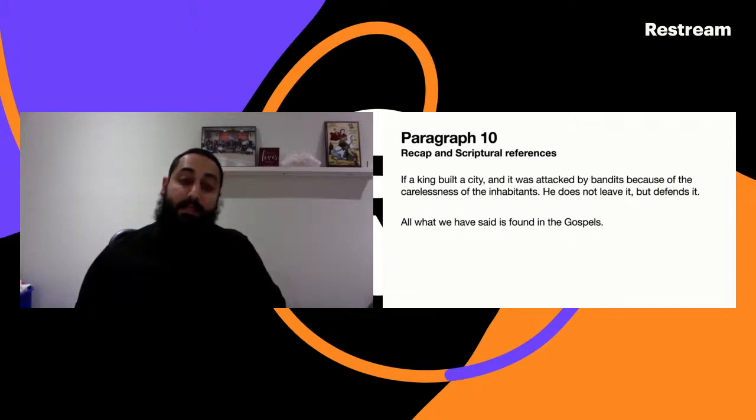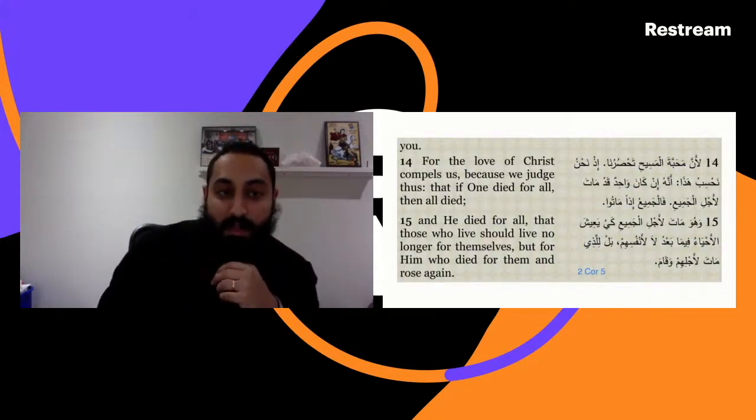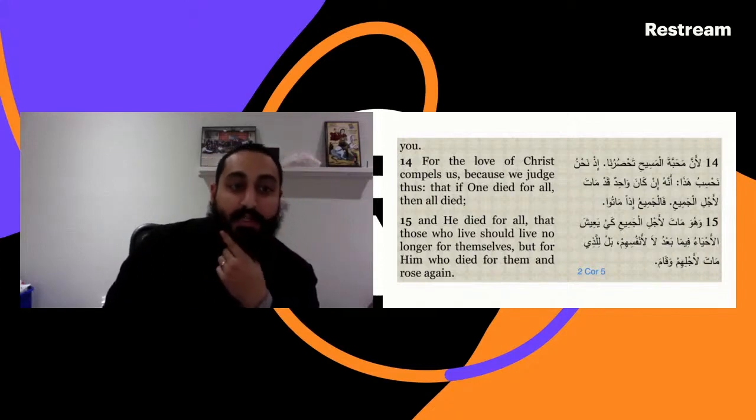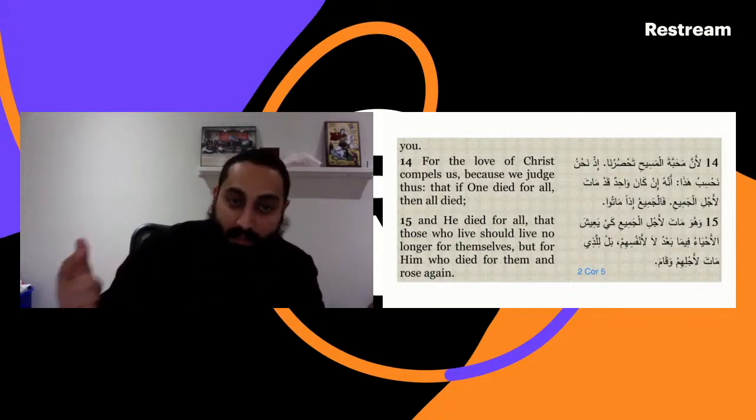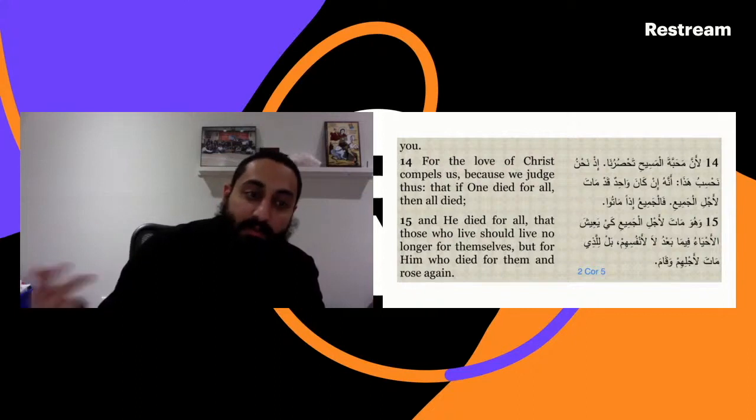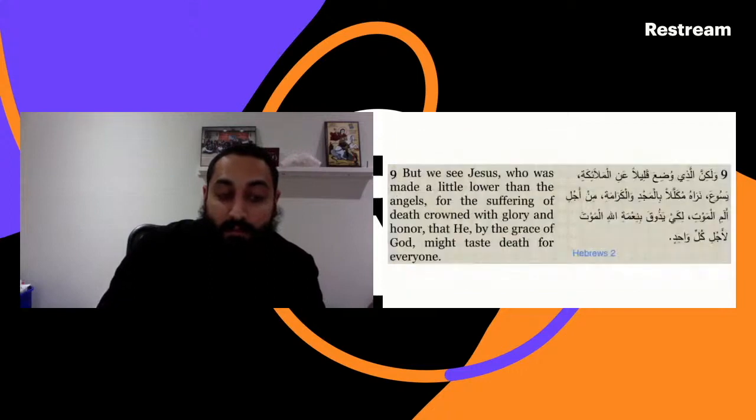In paragraph 10 we're going to have a recap, and he beautifully includes verses from the Bible that speak to the same things that he is speaking to. He moves on with this analogy of the king and he says if a king built a city and it was attacked by bandits because of the carelessness of the inhabitants, he does not leave it but he defends it. All what we have said is found in the gospel. All St. Athanasius has said is found in the gospels. Beginning from 2 Corinthians chapter 5, he says: For the love of Christ compels us because we judge thus, that if one died for all then all died. So Christ died for all of us, and through Him all of us have died, and then through Him all of us again are going to life. Then in verse 15 he says: And He died for all that those who live should live no longer for themselves but for Him who died for them and rose again.